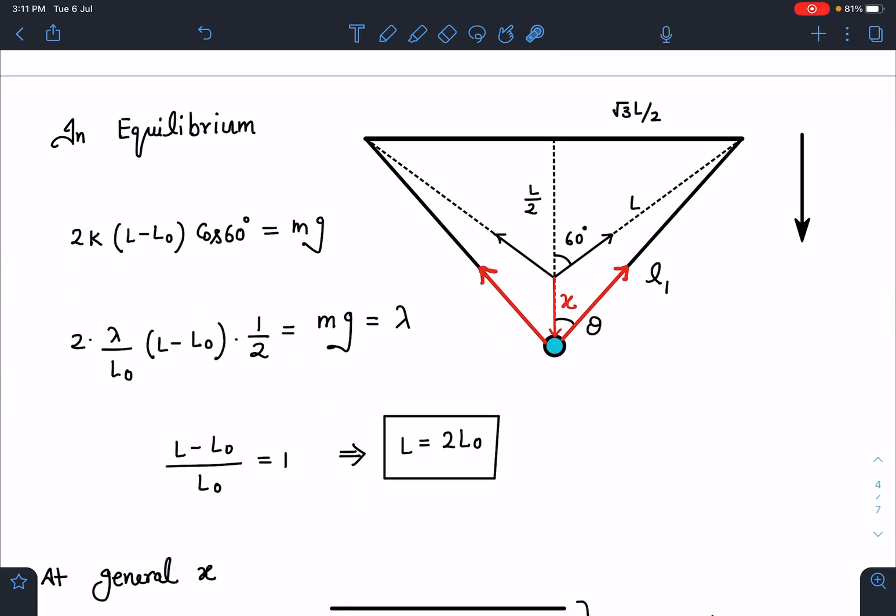Let's balance the forces. mg is downward and this k(ΔL), so ΔL will be L - L₀. You can see here 2k(L - L₀)cos60° = mg, and here this k is λ/L₀ and λ is mg here.